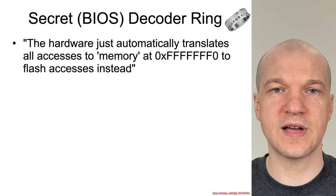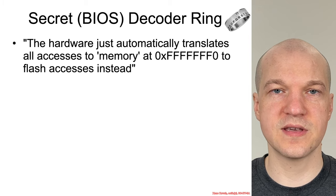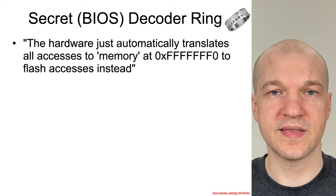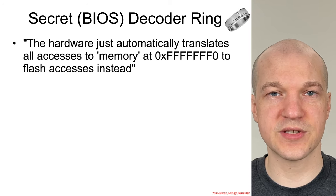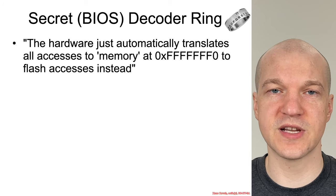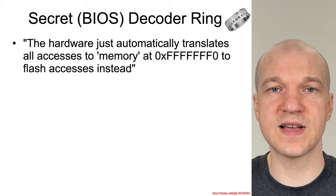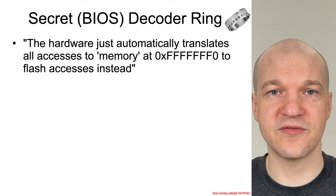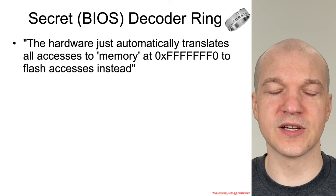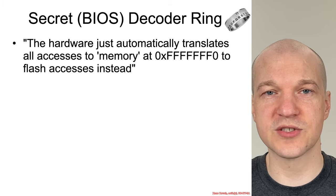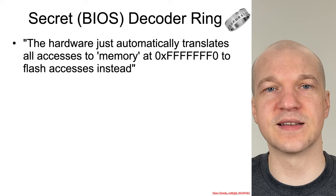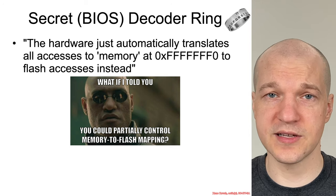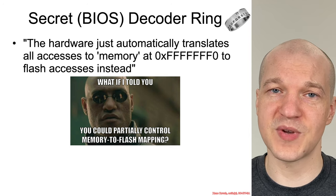Back in the reset vector section, we saw how an x86 processor's reset vector is the physical address 0xFFFFFFF0 — 4GB minus 16 bytes. That's the location where the processor fetches the first assembly instruction from the BIOS SPI flash chip. The fact that this address in physical memory is actually translated down to the BIOS SPI flash chip means there must be some hardware decoding going on, rerouting CPU fetches down to the SPI flash chip. What if we could actually see and slightly control this physical memory to SPI flash chip mapping?